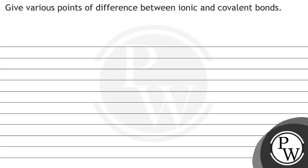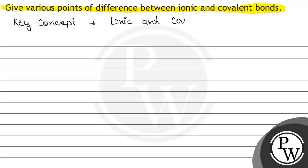Hello, let's read this question. Various points of difference between ionic and covalent bonds. The key concept of this question is ionic and covalent bonds. In this question, we have to tell the difference of ionic and covalent bonds.